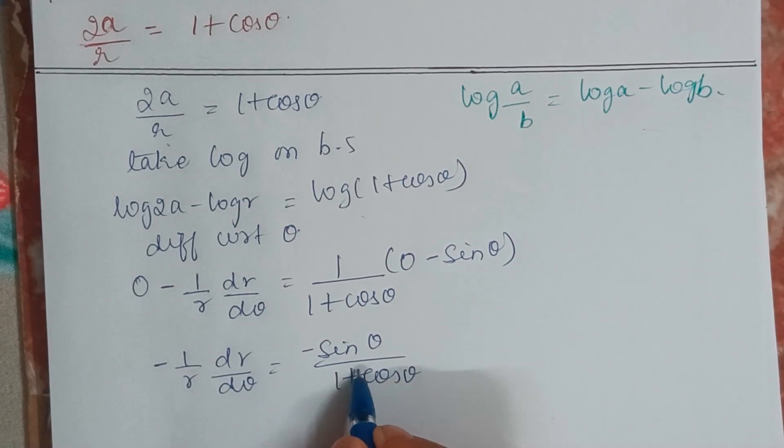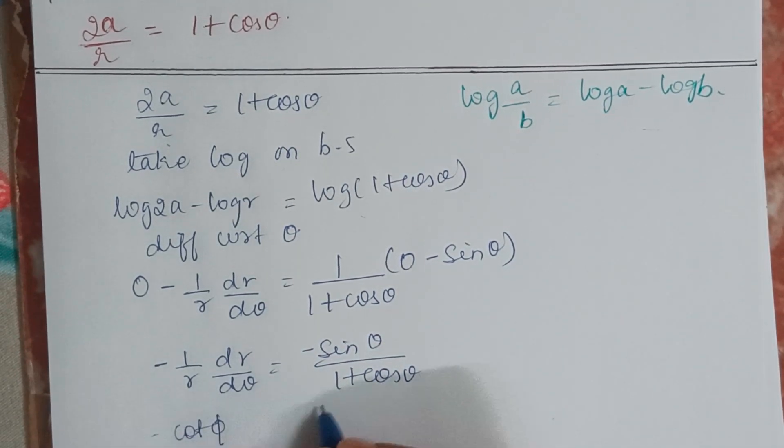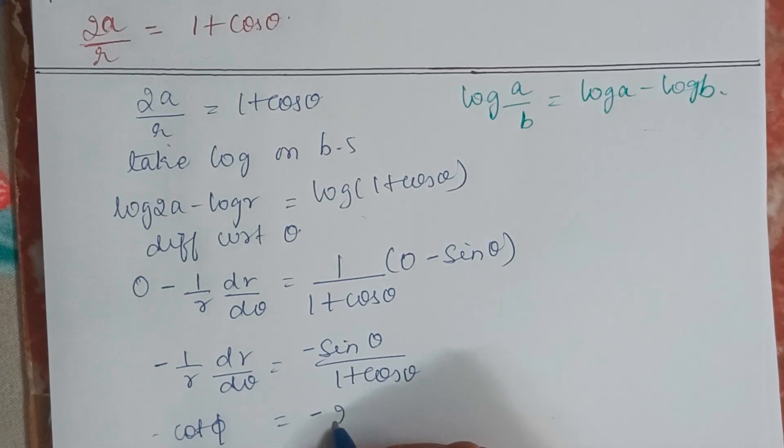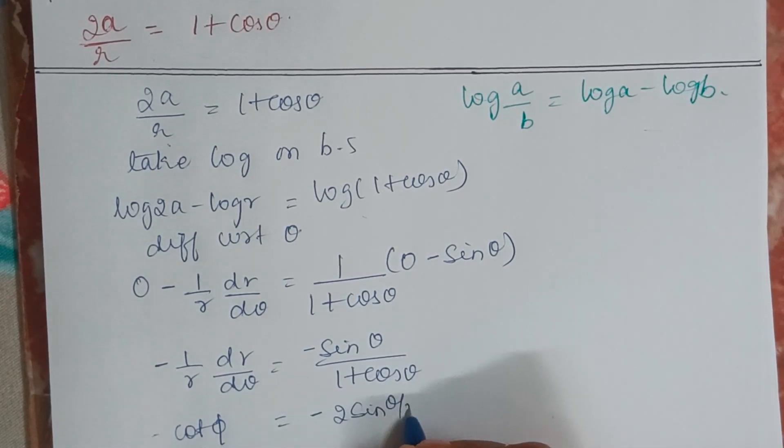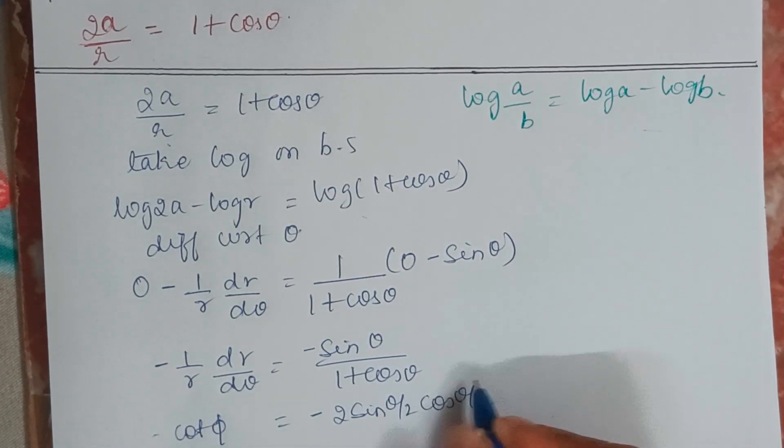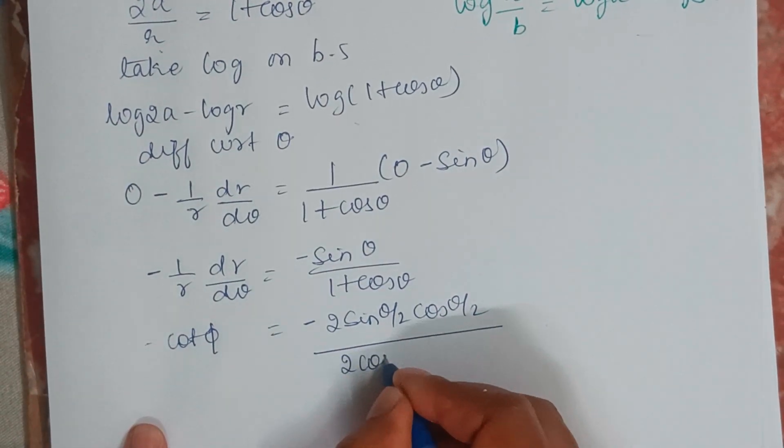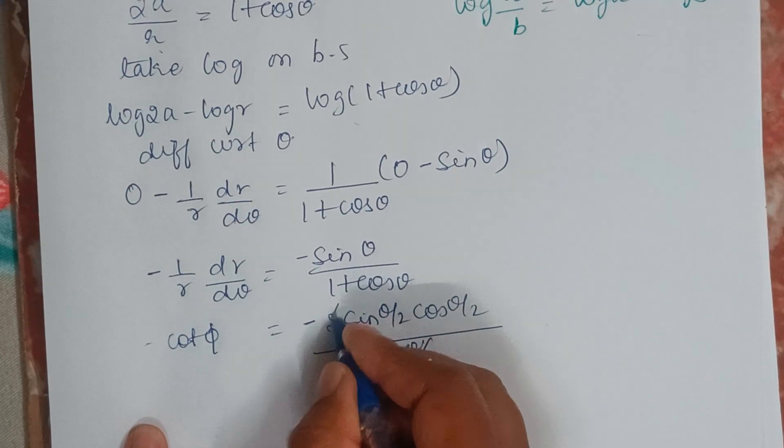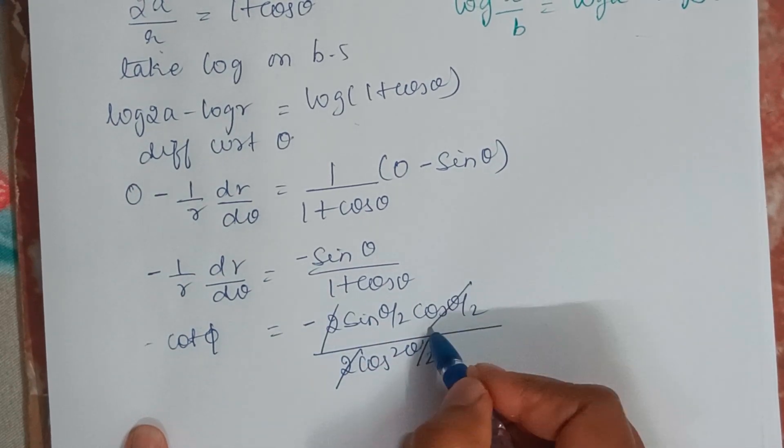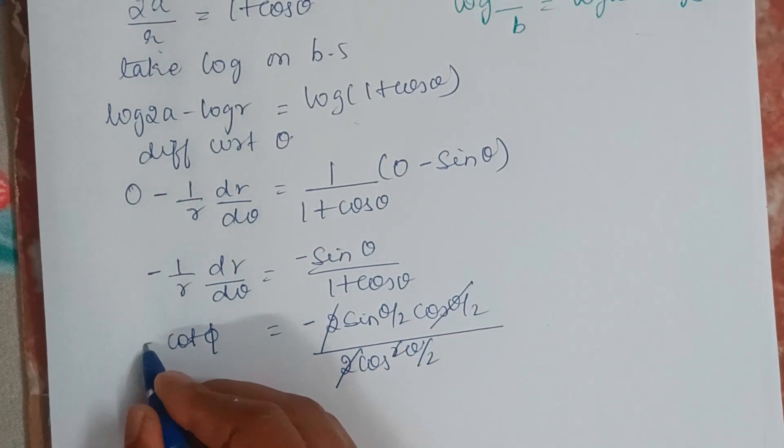So this can be written as minus 2 sin theta by 2 cos theta by 2 whole divided by 1 plus cos theta can be written as 2 cos square theta by 2. So 2 and 2 will get cancelled,